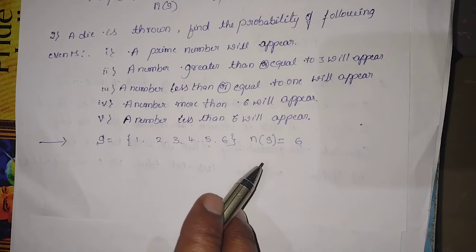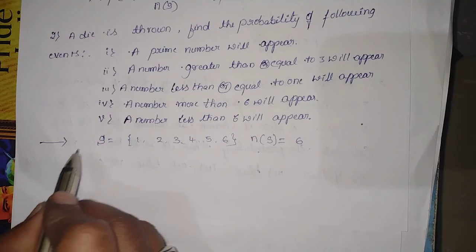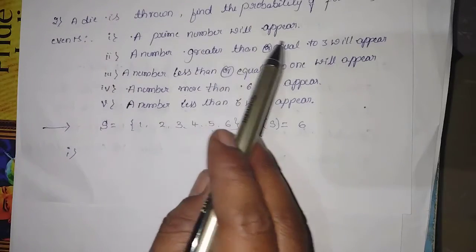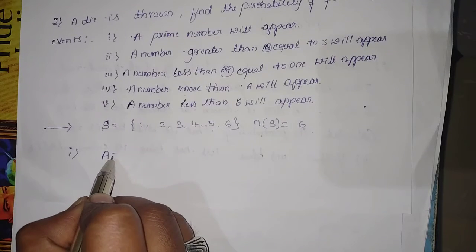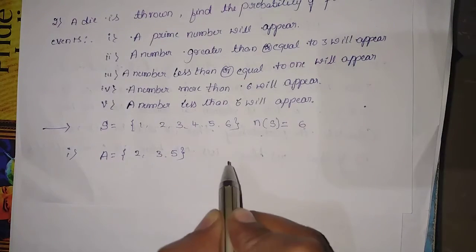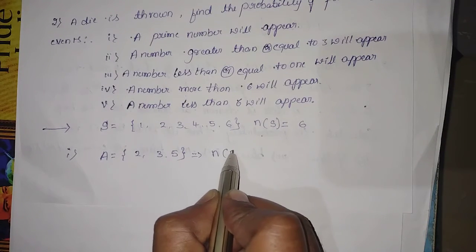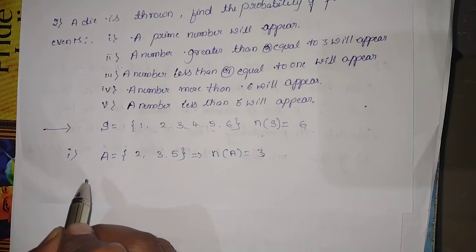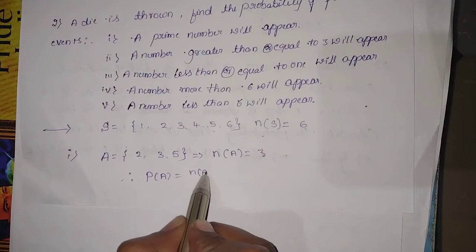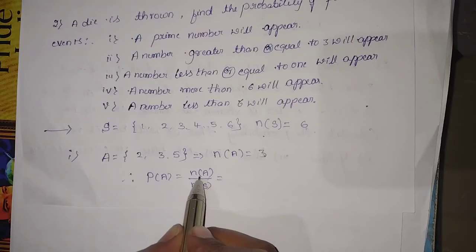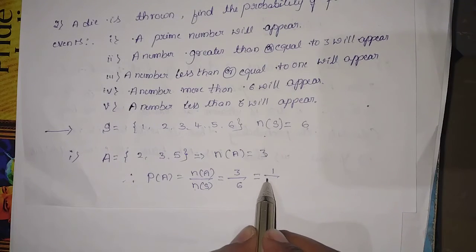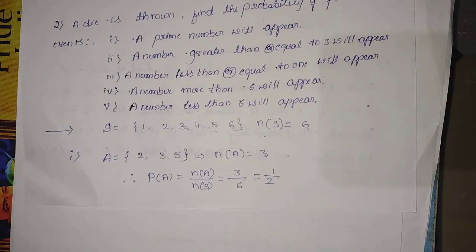First question — a prime number will appear: A = {2, 3, 5}, so n(A) = 3. P(A) = n(A) / n(S) = 3/6 = 1/2.